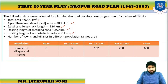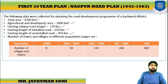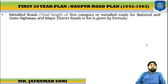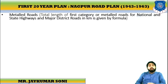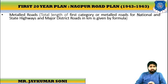There are 32 towns with population between 1,000 and 2,000. In order to calculate the total length of road, we have to calculate the length of the first category — metal road — and the length of unmetal road.